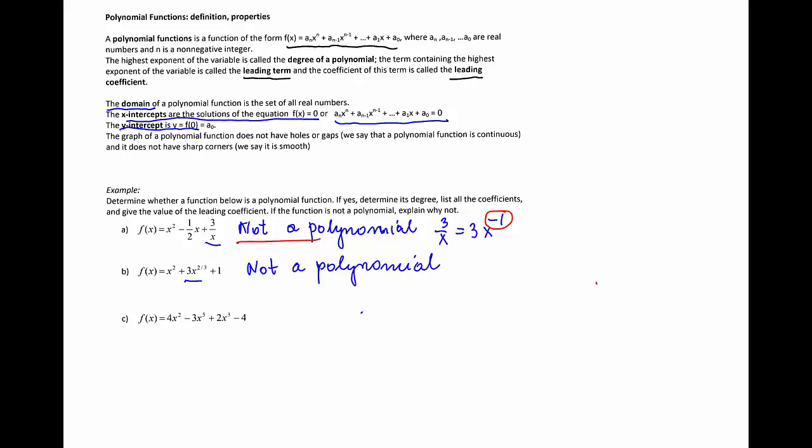The last example has the function 4x^2 - 3x^5 + 2x^3 - 4. This is a polynomial because all terms are in the right form.